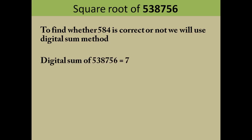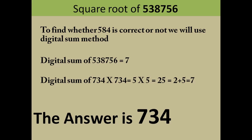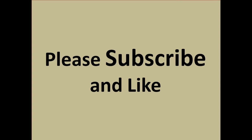Now we use the digital sum method: the digital sum of 538756 is 7, and the digital sum of 734 into 734 also gives 7. Since the digital sums match, our final answer is 734. Thanks for watching this video — please subscribe, like, and leave a comment if you want to know anything or found something useful.